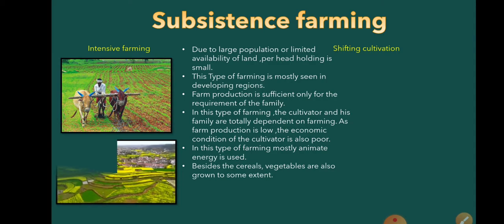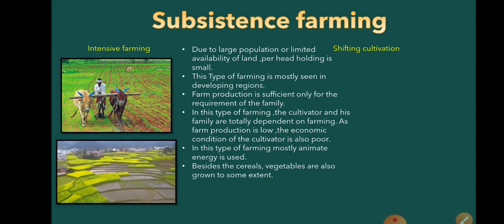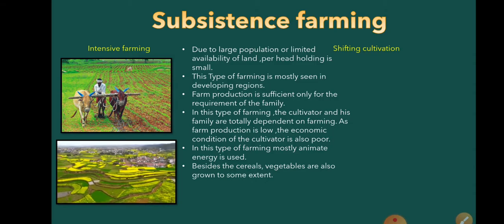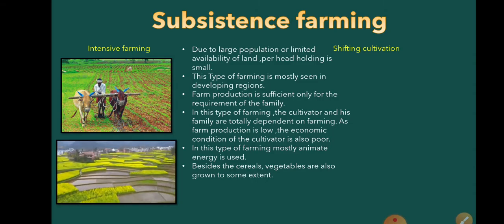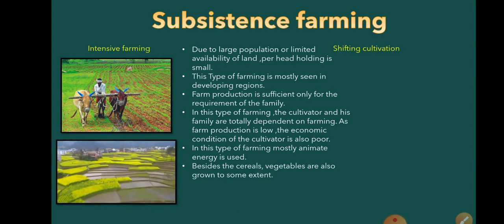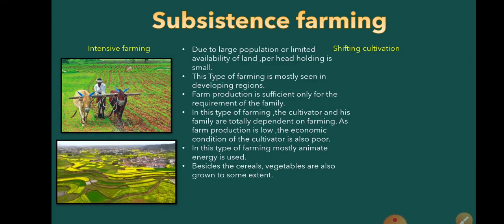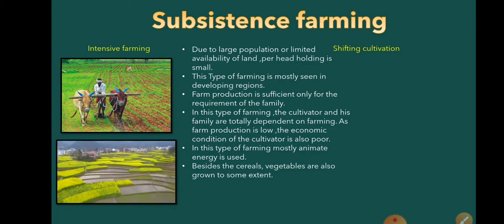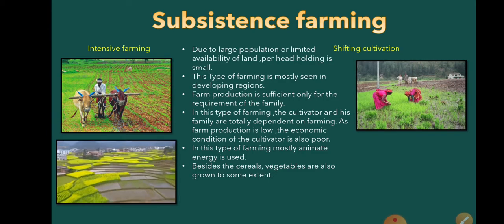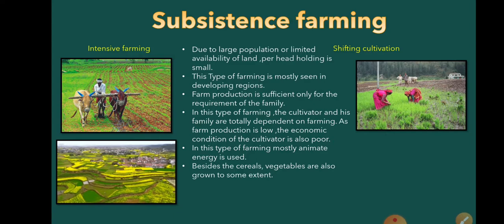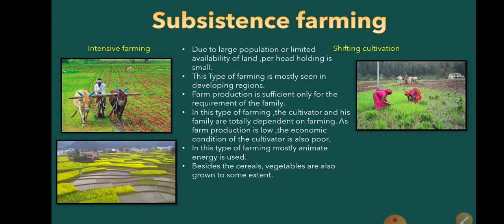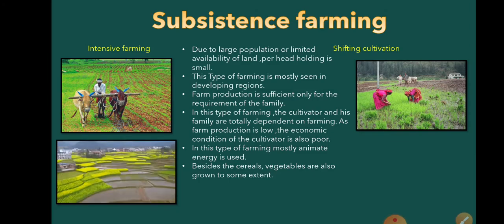Now we will see what intensive farming is. Getting maximum production from a minimum area is called intensive farming. Due to large population or limited availability of land, the per-head holding is small, and this type of farming is mostly seen in densely populated regions. Farm production is sufficient only for the requirement of the family. So this is called intensive farming.